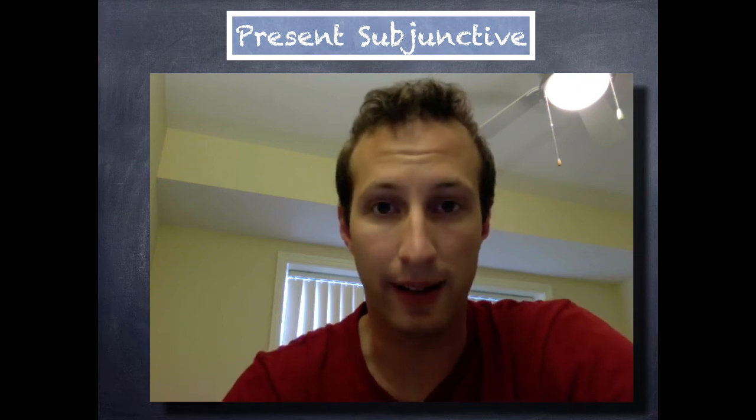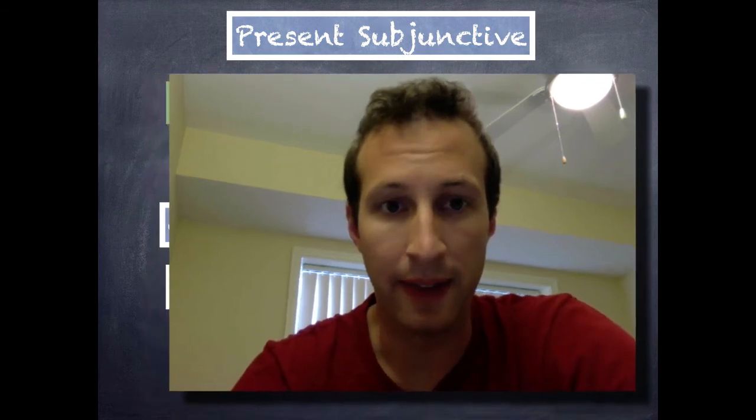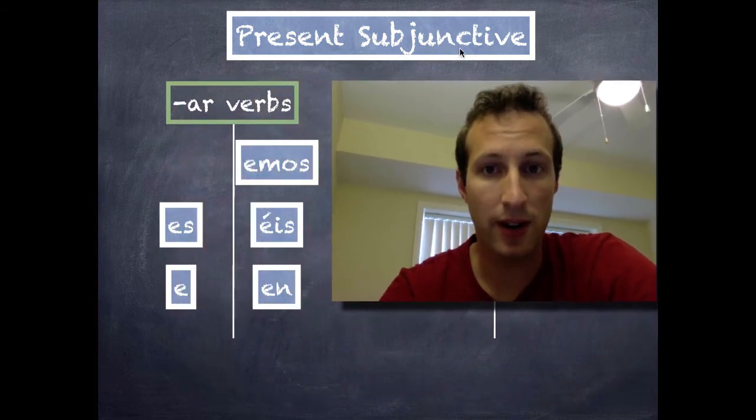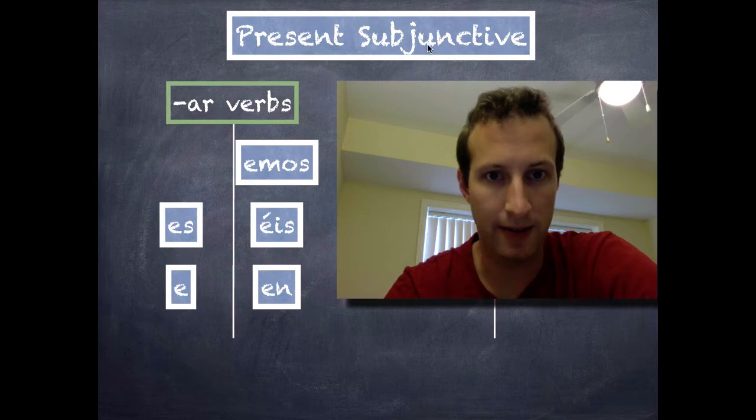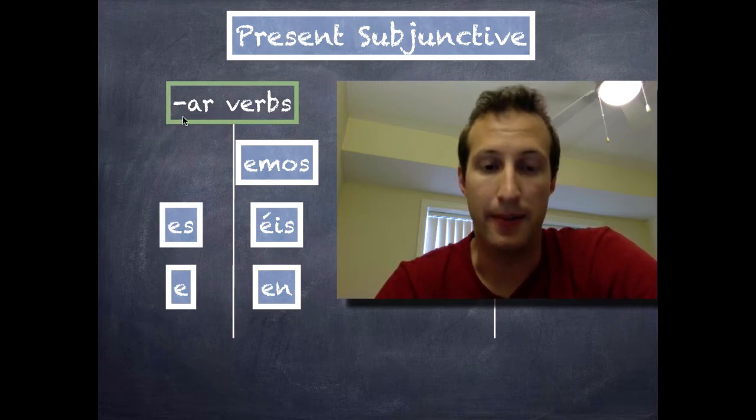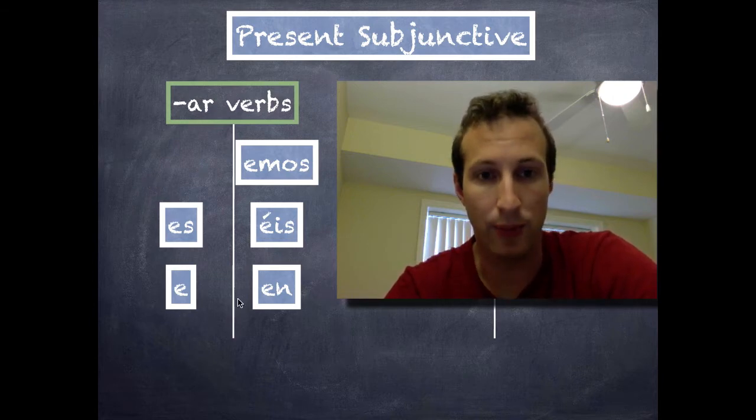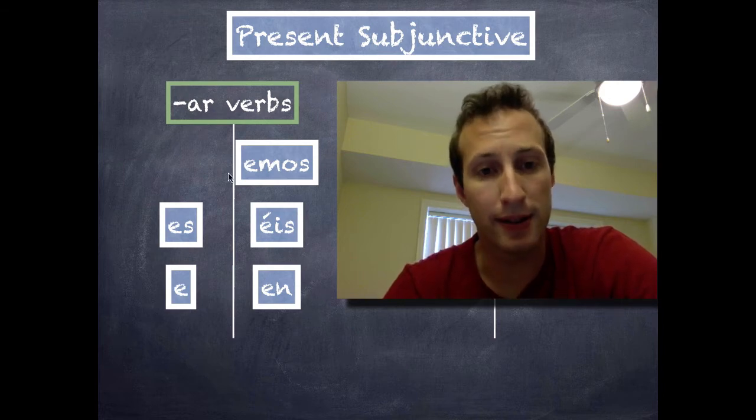We're going to start off by learning what the actual conjugations are. This is the subjunctive conjugation, present subjunctive, for AR verbs. If you look at these, you'll notice two things about them. One, they're very similar to the imperative conjugations.